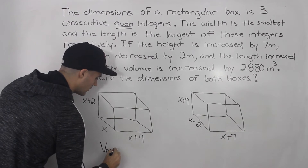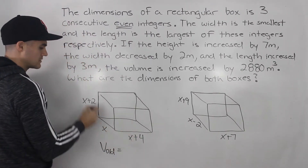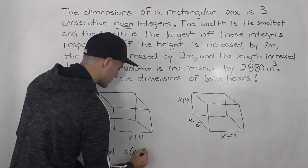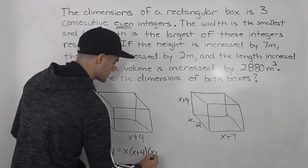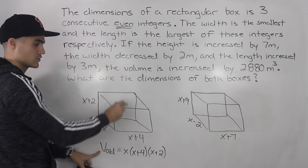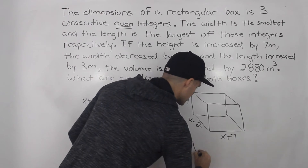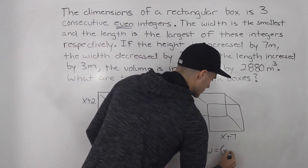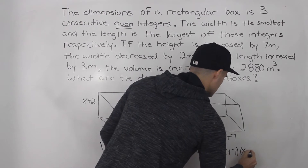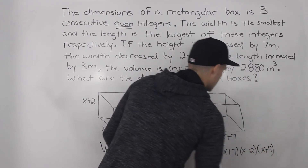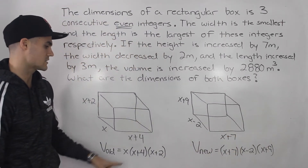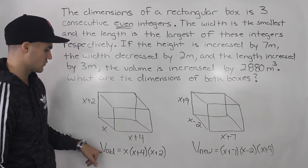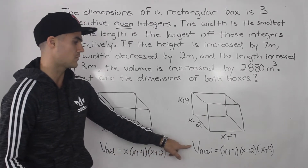The volume of the old box is length times width times height. Putting the width x in front, we get x times (x plus 4) times (x plus 2). The volume of the new box is length times width times height: (x plus 7) times (x minus 2) times (x plus 9). It doesn't matter which order you multiply — I just put the width term first so that x is in front.